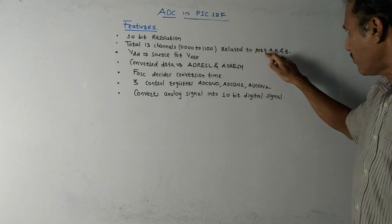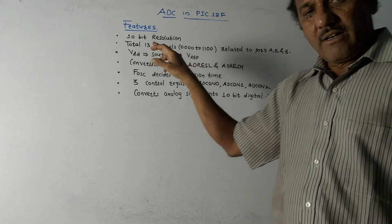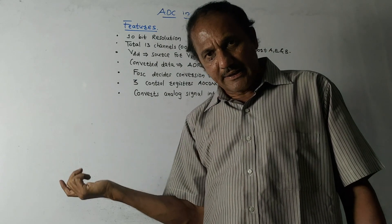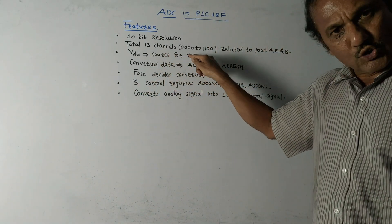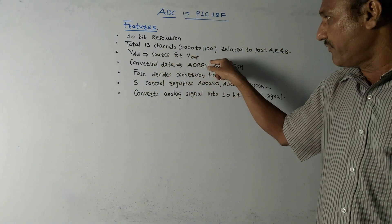They are related to port A, E, and port B. Then VDD, which is shown in the earlier block diagram, acts as a source for V reference, that is the reference voltage.